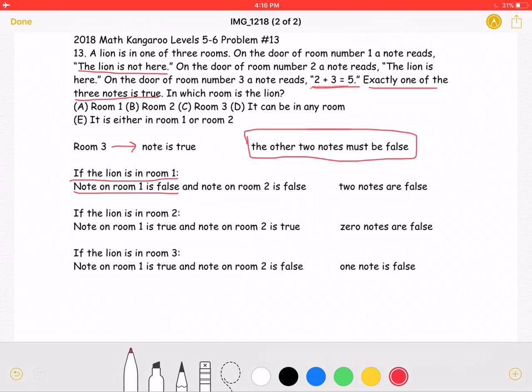And the note on room 2, which states the lion is here, would also be false. This would mean that two notes are false.